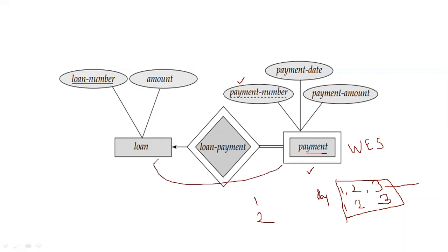To solve this problem, we need to associate the weak entity set with a strong entity set. The weak entity set 'payment' is associated with another entity set 'loan', which is a strong entity set because loan number is fixed. A payment is made for a particular loan number, so in this way, payment numbers one, two, three will become unique for a particular loan.